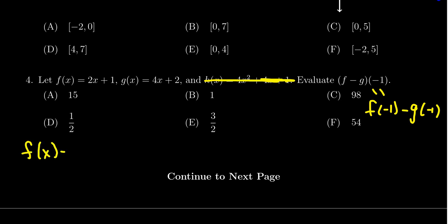Notice if we take f of x minus g of x, we're going to end up with 2x plus 1, that's the function for f, and then subtract from that 4x plus 2.